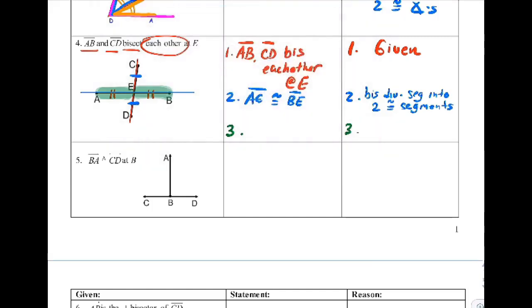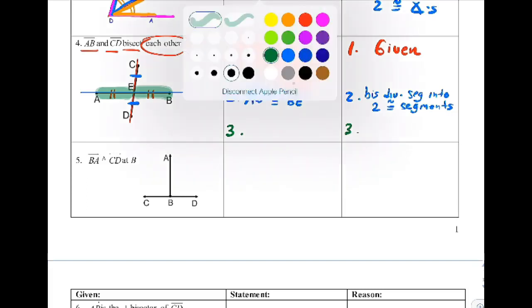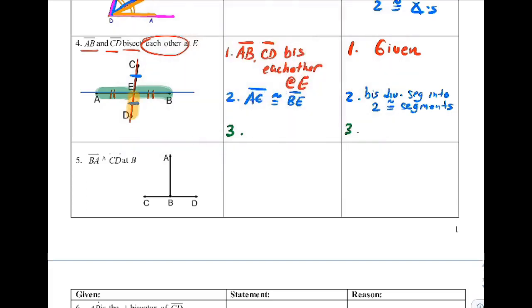And the exact same thing for the other side, meaning DE and CE are also congruent for the exact same reason, because they bisected each other. So a bisector divides a segment into two congruent segments. So because of the word 'each other,' we actually knew two different things.